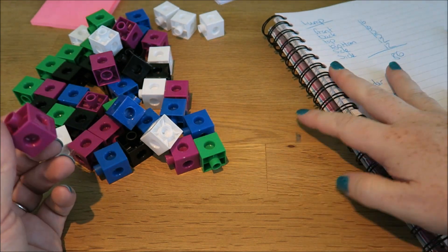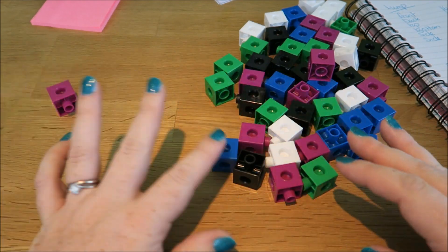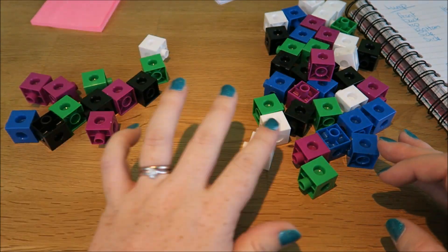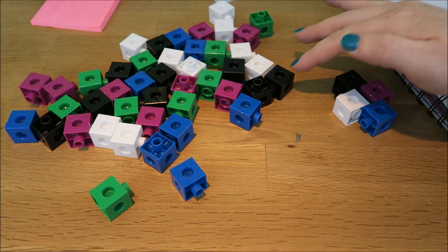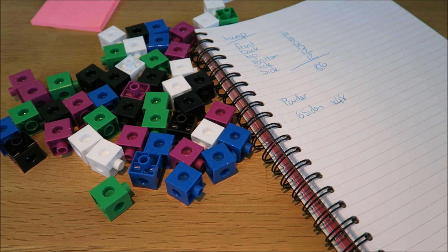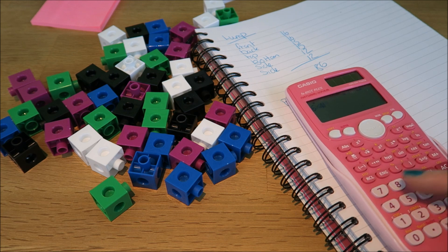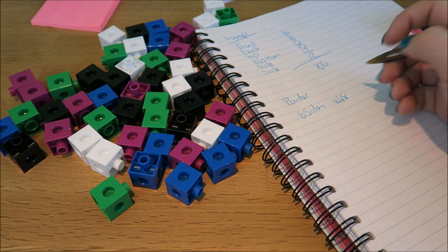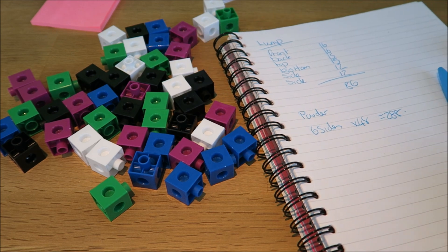And I have 48 blocks. So six sides on 48 blocks. Six times 48 equals 288.